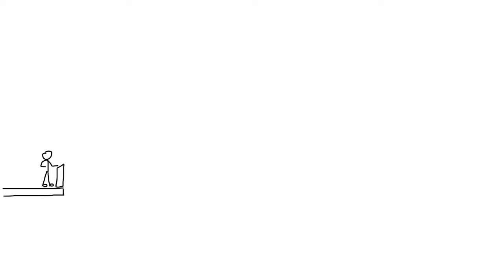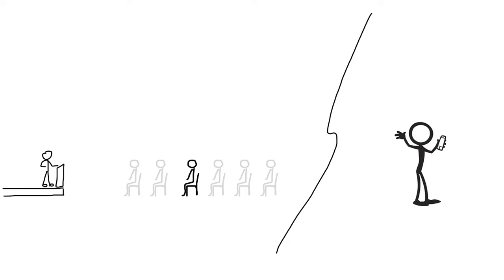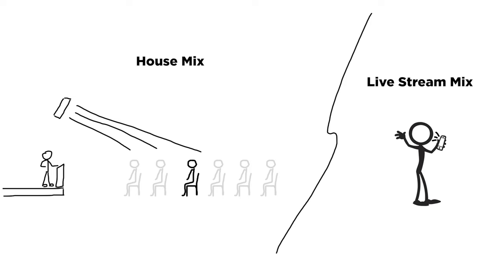Let's talk about why a live stream mix has different mix requirements than your house mix, and then at the end we'll take that knowledge and apply it to some strategies for creating a great sounding live stream mix. If we think about two different listeners, we have a person in our room sitting with all the rest of our congregation, and then we have our live stream listener. The person in the room is hearing what's going on through the sound system with the mix that's coming from our front of house mixer, while the person at home is listening on a device — that could be a phone, tablet, TV, headphones, whatever it is. These two people hear what's happening in the room very differently, and that creates different requirements for these two mixes.